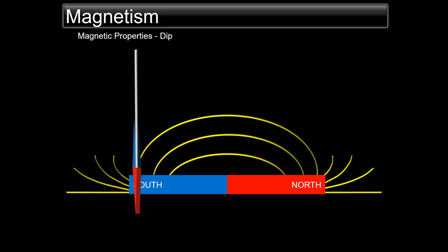A free-turning magnet always aligns in a north-south orientation. The property of dip or magnetic inclination means a magnetic needle, if suspended freely, makes an angle with the horizontal called dip. Dip can be measured at various points on the Earth's surface, and charts are available indicating the dip at various locations. When the needle dips towards the north it is a positive dip, and when it dips towards the south it is a negative dip.